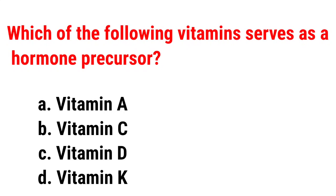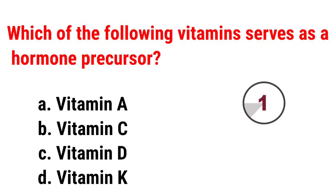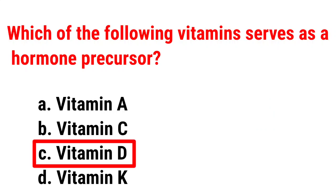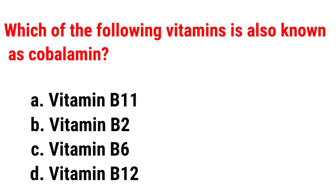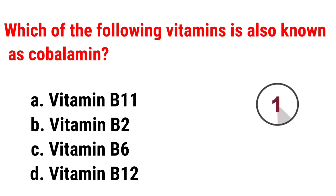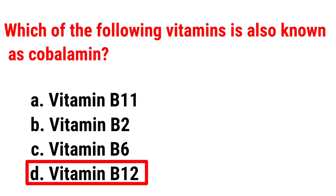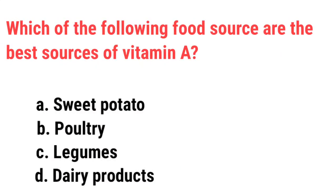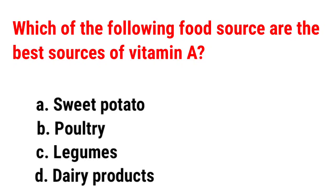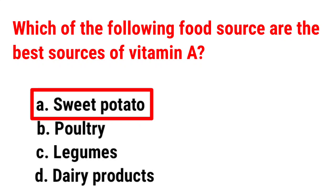Which of the following vitamins serves as a hormone precursor? Correct answer is Vitamin D. Which of the following vitamins is also known as Cobalamin? Correct answer is Vitamin B12. Which of the following food sources are the best sources of Vitamin A? Correct answer is Sweet Potato.